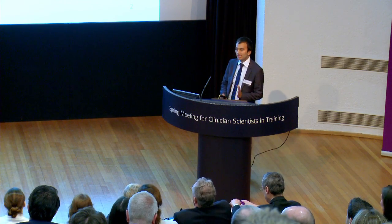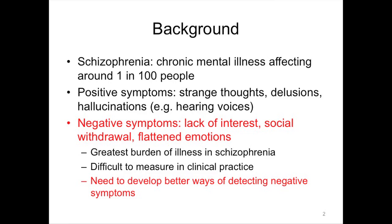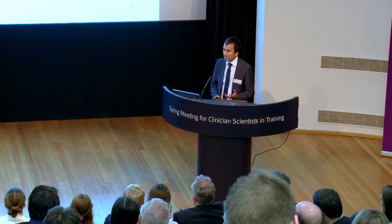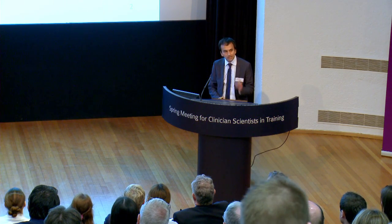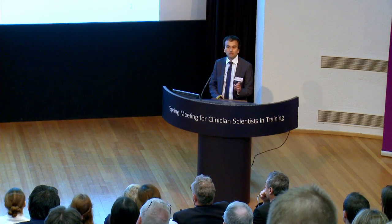What is schizophrenia? Schizophrenia is a chronic mental illness affecting about 1% of the population and it's characterised by positive symptoms such as delusions and hallucinations, but also negative symptoms. These are things like lack of interest, social withdrawal, flattened emotions. We're beginning to realise that it's actually these symptoms which are responsible for the greatest burden of illness and disability in schizophrenia. But the issue is they're quite hard to measure in clinical practice, so there's a real need to develop better ways of detecting these symptoms.